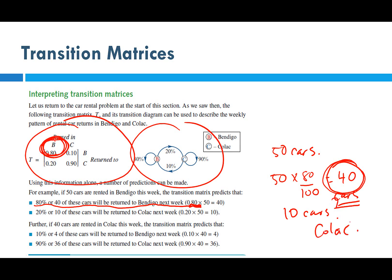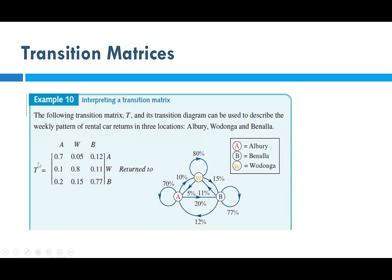That's what happens when you introduce numbers into the transition matrix calculations. For example, if there were 100 cars, 80% — so 80 cars — would be rented in Bendigo and returned to Bendigo, and the remaining 20 cars would be in Colac.